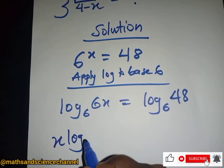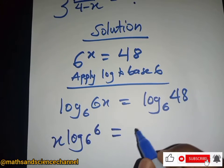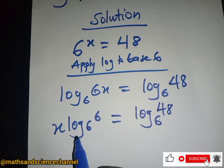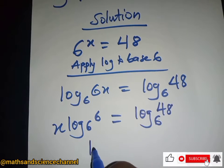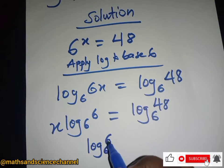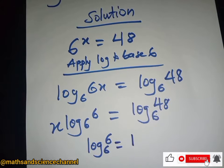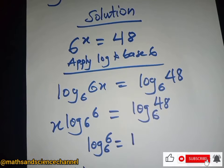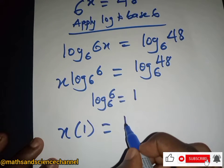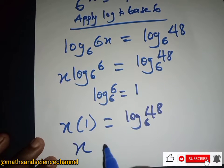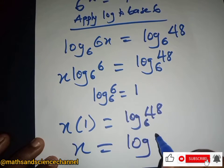So we have x times log base 6 of 6 being equal to log base 6 of 48. Now, one property of logarithms is that log base 6 of 6 equals 1. So that simplifies to x being equal to log base 6 of 48.